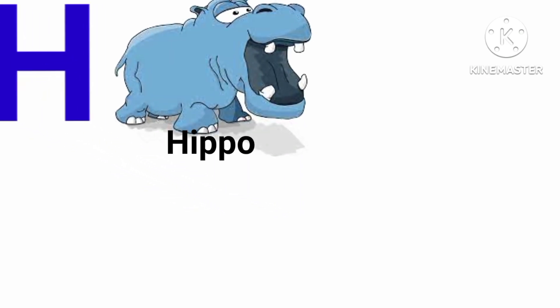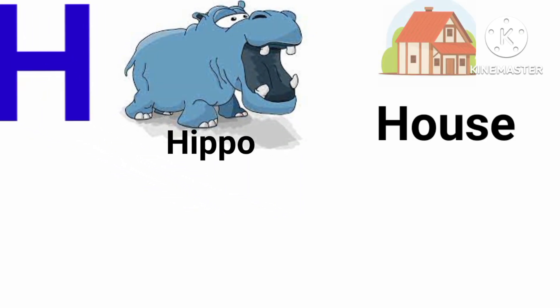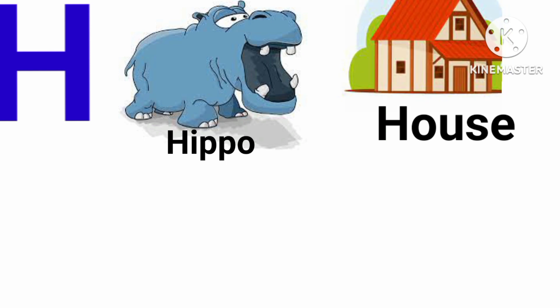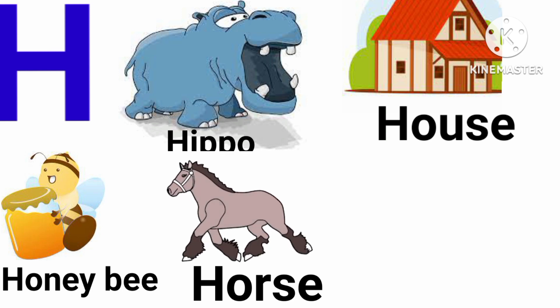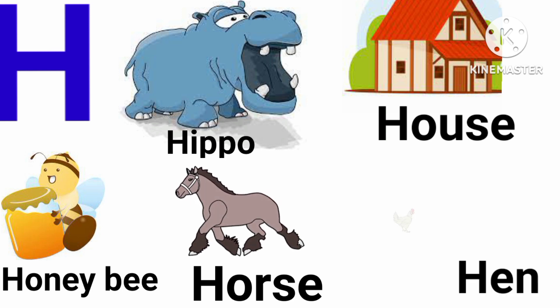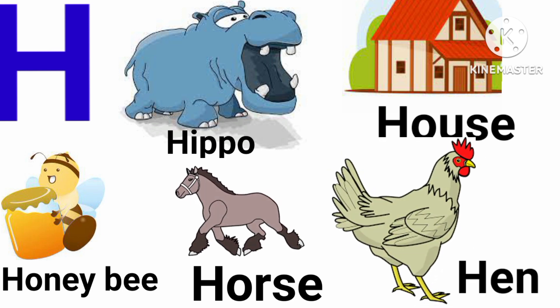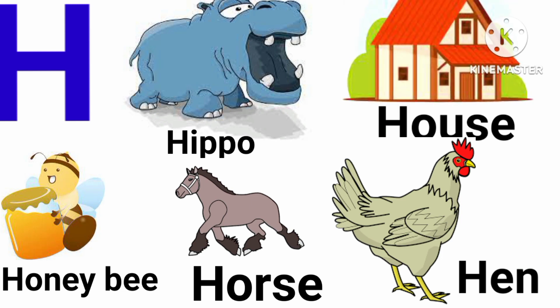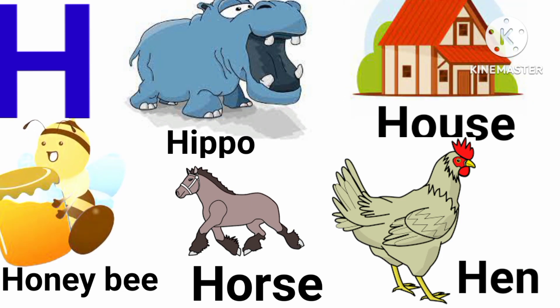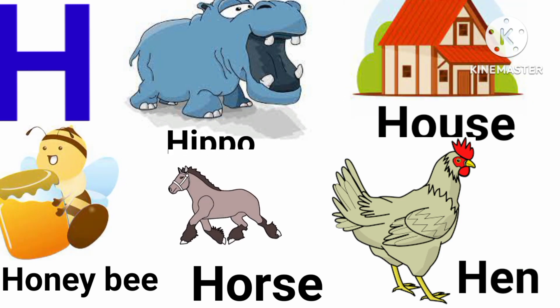H for hippo. H for house. H for horn. H for honeybee. H for horse. H for hen. Let us repeat these words. Hippo. House. Horn. Honeybee. Horse.